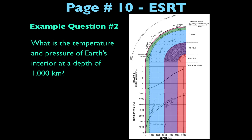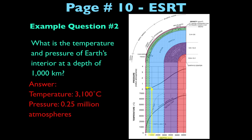Another question combines two things: what is the temperature and pressure of Earth's interior at a depth of 1,000 kilometers? Locate 1,000 kilometers on the x-axis, then bring that up to the temperature line and stop when you intersect the data line. Look over to the temperature axis and estimate — the temperature is about 3,100 degrees Celsius. For pressure, do the same but bring it up to the pressure line and look at the y-axis. A good answer would be temperature of about 3,100 degrees Celsius and pressure of about 0.25 million atmospheres.